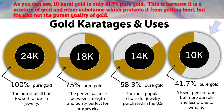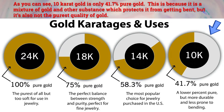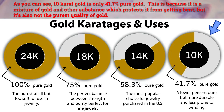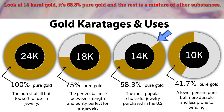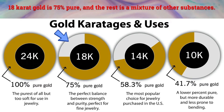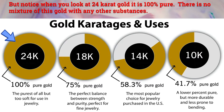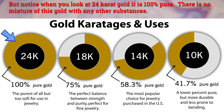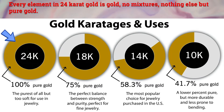As you can see, 10 karat gold is only 41.7% pure gold — it is a mixture of gold and other substances which protects it from getting bent, but it's also not the purest quality of gold. 14 karat gold is 58.3% pure gold and the rest is a mixture of other substances. 18 karat gold is 75% pure and the rest is a mixture of other substances. But 24 karat gold is 100% pure — there is no mixture with any other substances. Every element in 24 karat gold is gold: no mixtures, nothing else but pure gold.